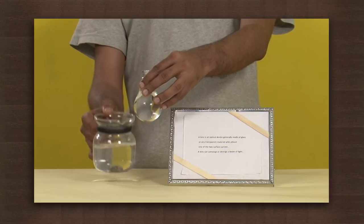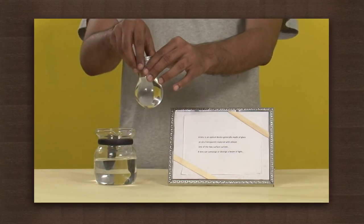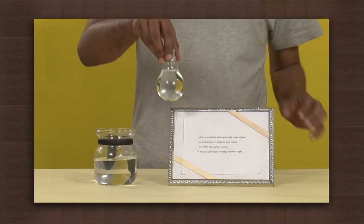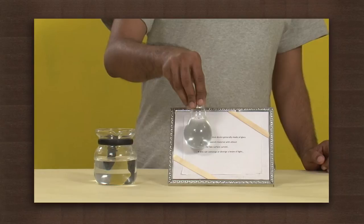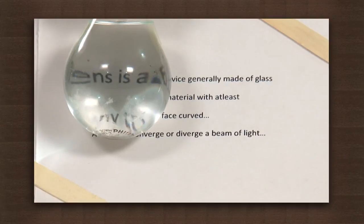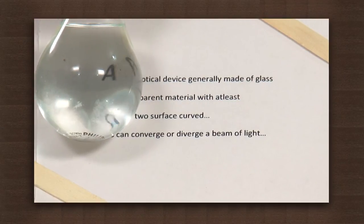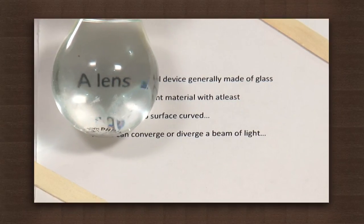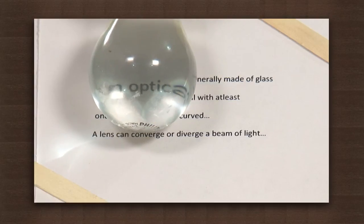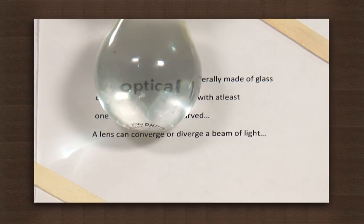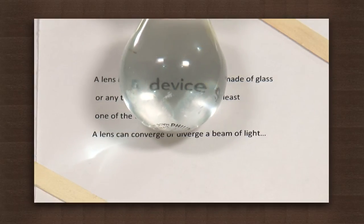Read the printed letters on the piece of paper by holding the bulb in front of the paper. You will observe that we get a magnified image of the letters.